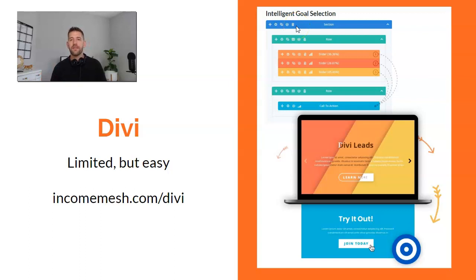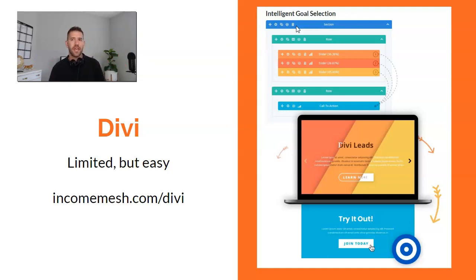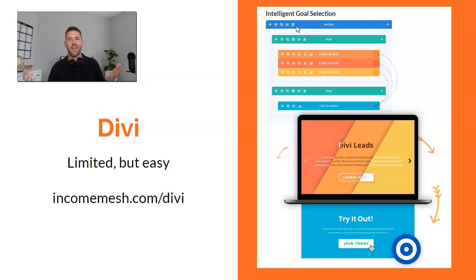With Divi, you're really more focused on things like changing your headline, changing the background image, or changing the button color — and those types of element-level tests work perfectly well with the Divi Leads setup. My wife and I use Divi on her website and we love it. It's incomemesh.com/divi, and they also have a lifetime deal for their page builder. Having a built-in split testing engine within the page builder itself is pretty cool.